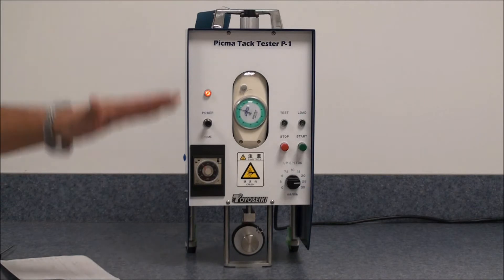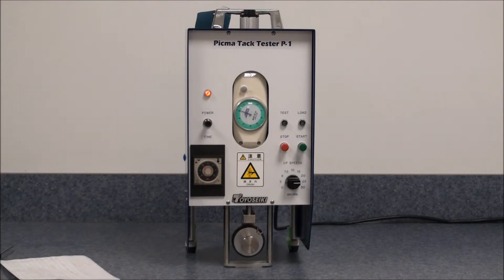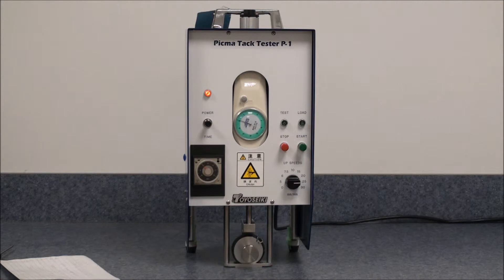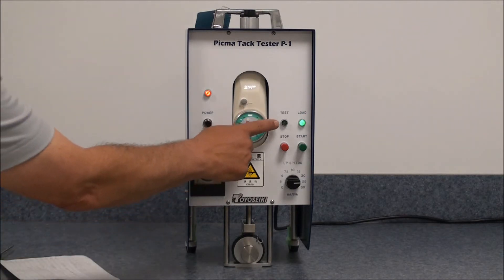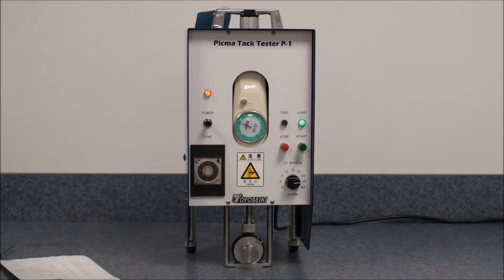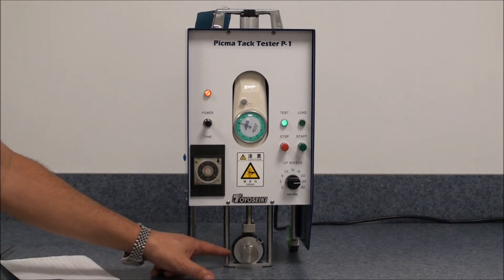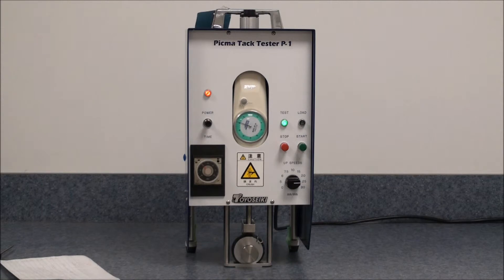The sample will then lower itself to the contact surface to a load of 4.9 newton. When it makes contact, the test light will come on, and the dwell will be on for the predetermined amount of time.